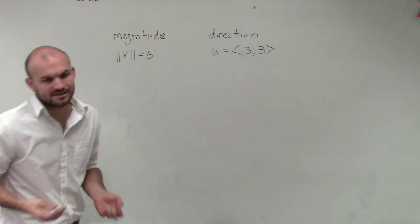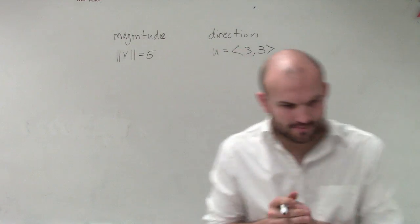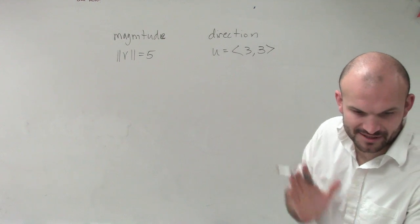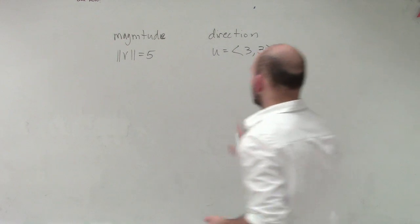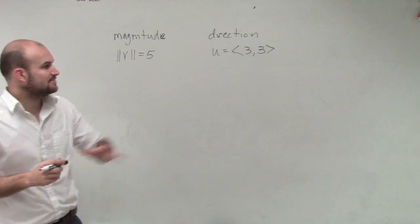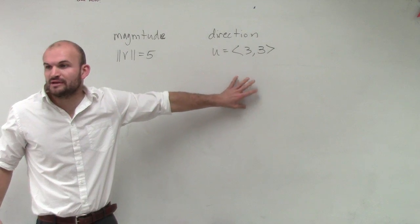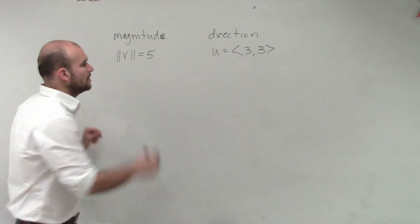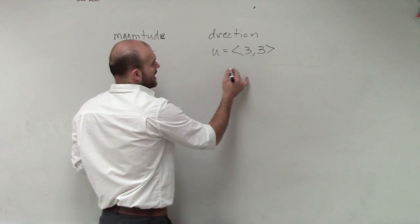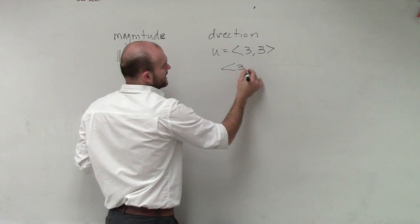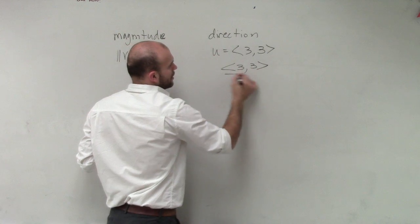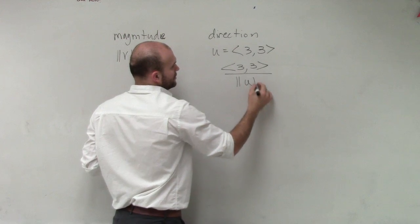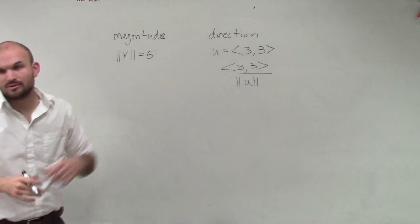So what they're asking us to do for this problem is find the vector v with the given magnitude, so we have a given magnitude, and the same direction as u. Before we get to this, we need to be able to write this down as our unit vector so we can find exactly what our angle is going to be. So first thing, we'll have <3, 3> all over the magnitude of u. Well, we need to figure out what the magnitude of u is.